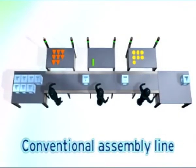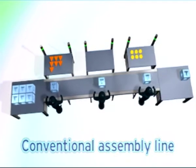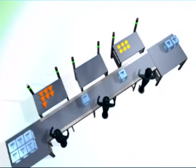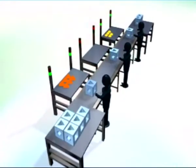In conventional assembly lines it is difficult to find and maintain the perfect balance. Disturbances to the assembly process can easily occur and these will have a negative, knock-on effect on efficiency.